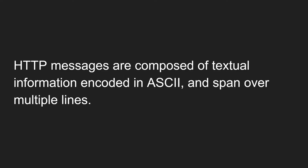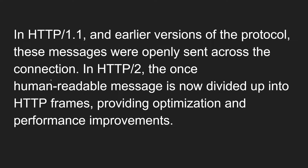Now we need to know what type of content is present in an HTTP message. HTTP messages are composed of textual information encoded in ASCII, spanning multiple lines. In HTTP 1.1 or earlier versions of the protocol, these messages were openly sent across the connection. In HTTP 2, the human-readable message is now divided into frames, providing optimization and performance improvements.